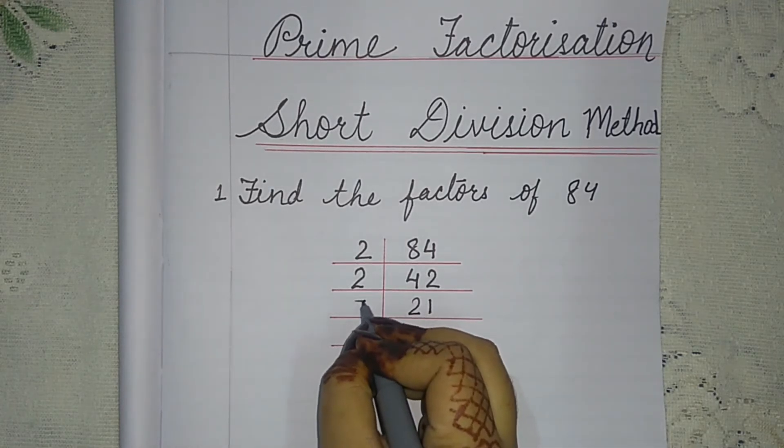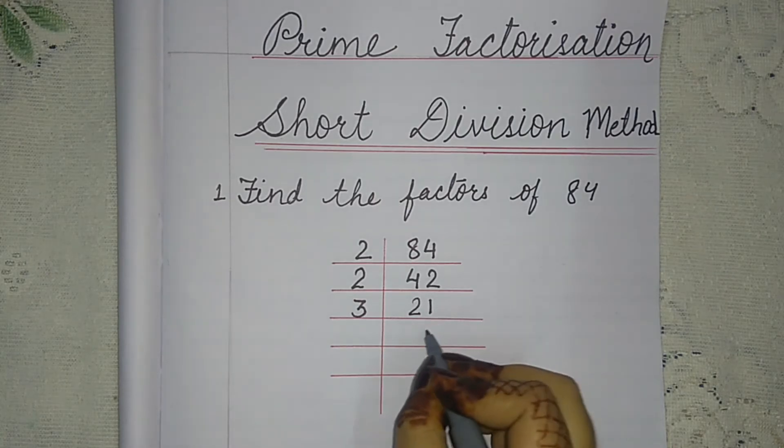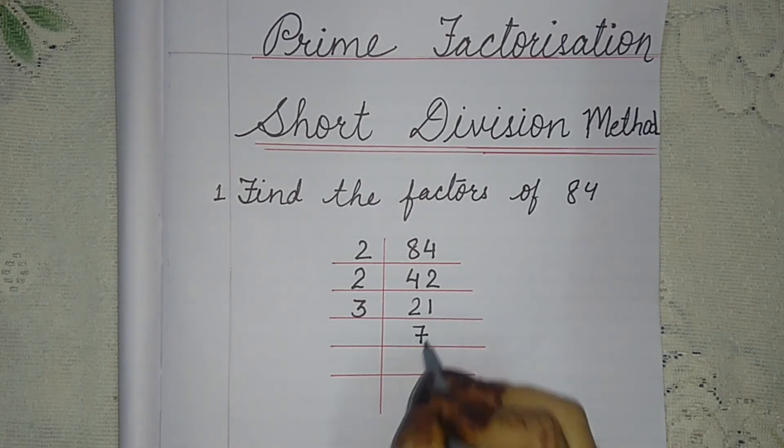Divided by 3, write it down here. In the table of 3, how many times does 21 come? Three ones are three, three twos are six, three threes are nine, three fours are twelve, three fives are fifteen, three sixes are eighteen, three sevens are twenty-one. So we will write here 7.